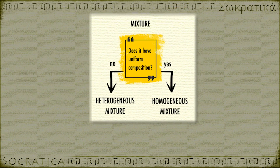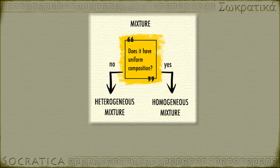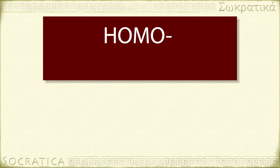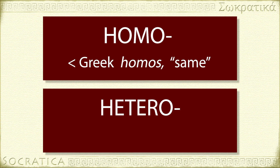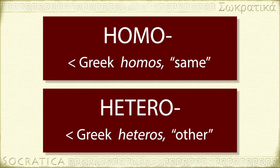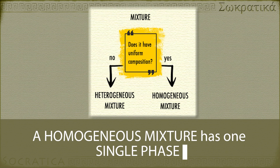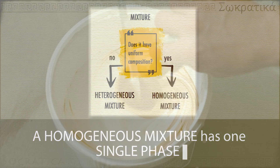Chemists also distinguish between a homogeneous mixture and a heterogeneous mixture. Can you figure out the difference based on a little etymology? 'Homos' is a Greek prefix meaning 'the same,' and 'hetero' is a Greek prefix meaning 'other' or 'different.' A homogeneous mixture has the same composition throughout—it's a uniform mixture all the way through.